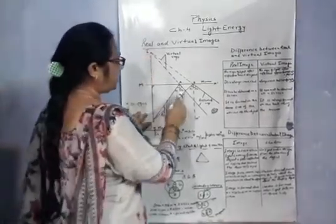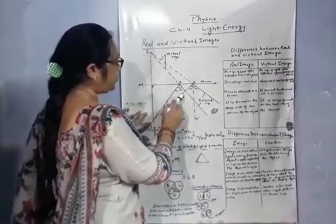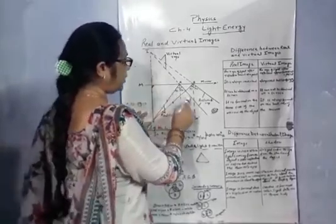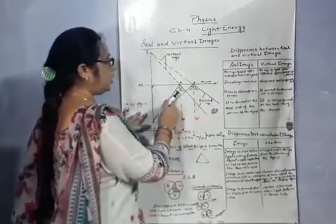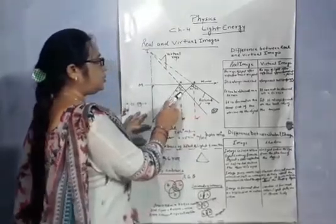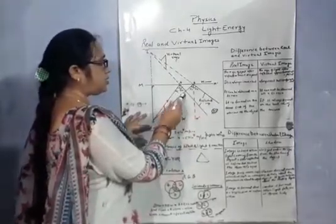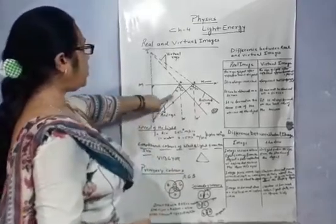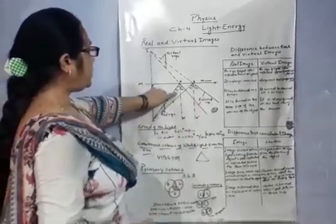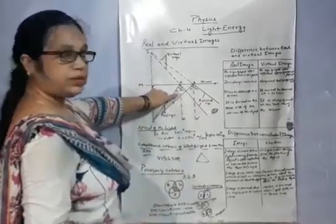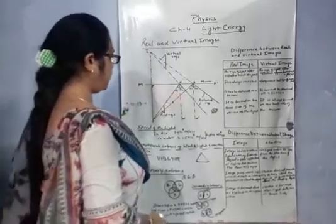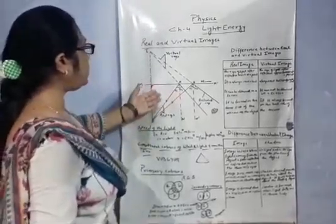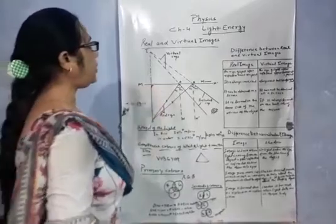After reflection, between the incident rays and the reflected rays, there are two angles: angle i and angle r. According to the law of reflection, angle i is equal to angle r. So this is the virtual image formation from the mirror.